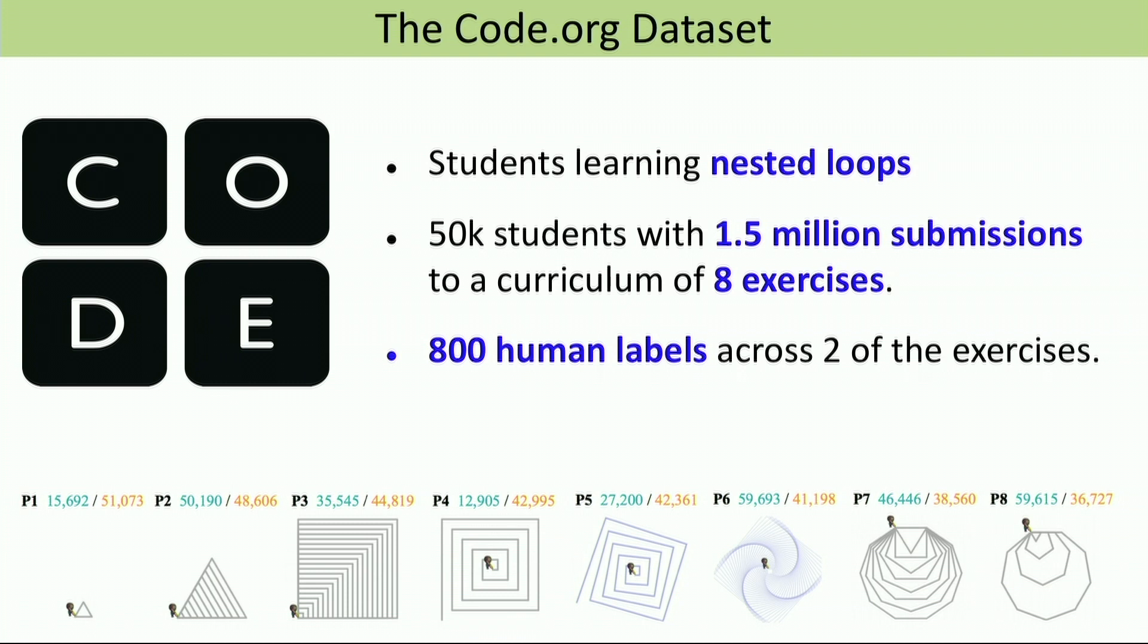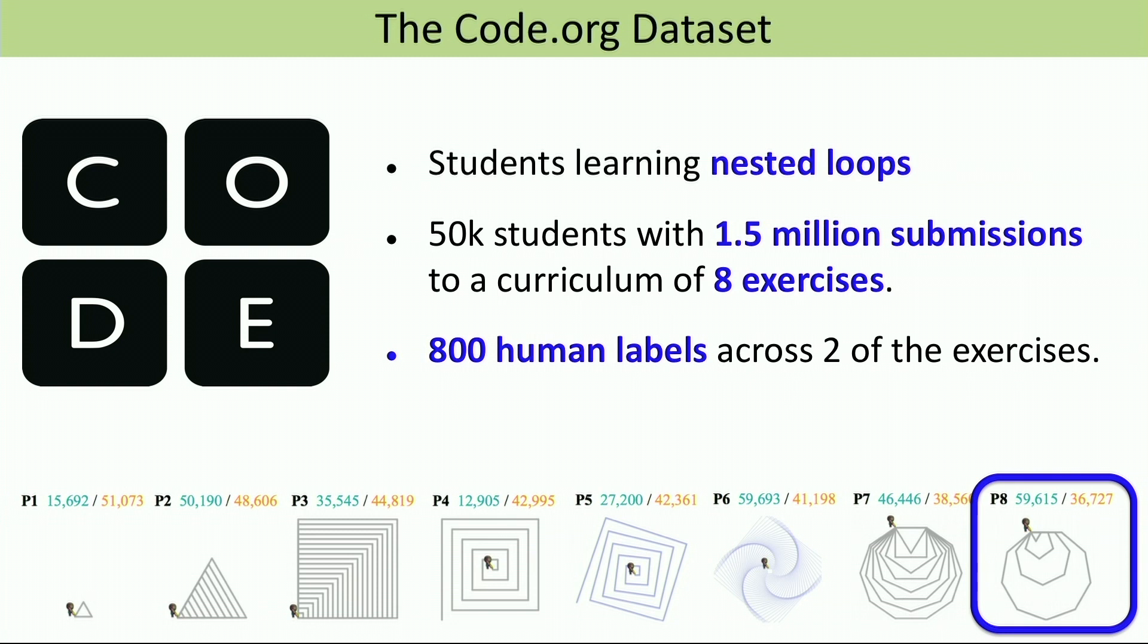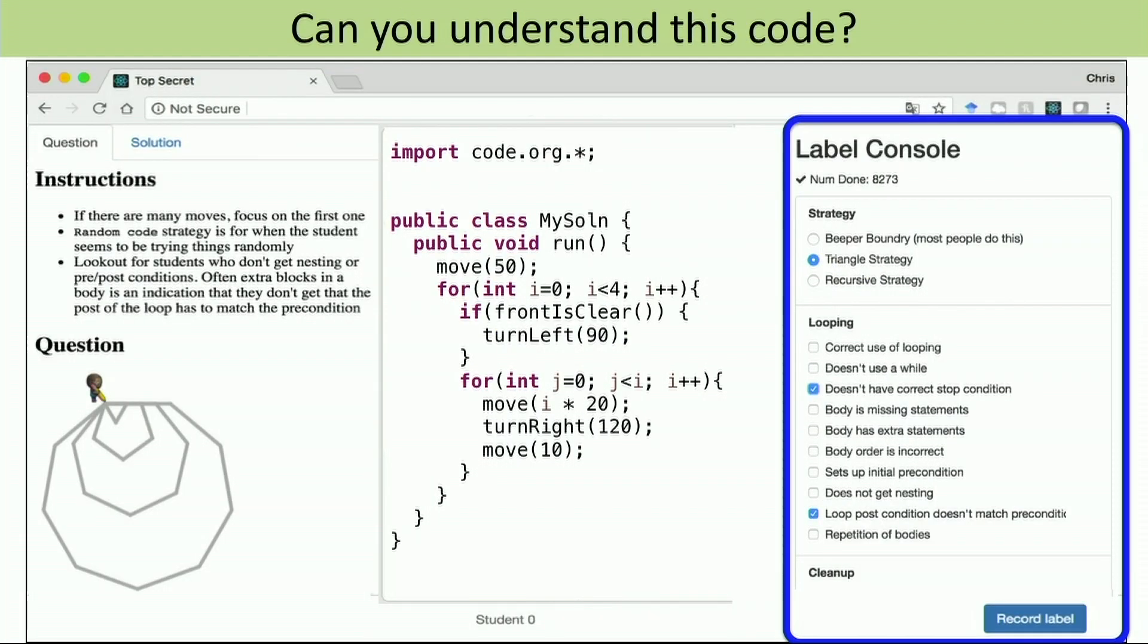I got really interested in this problem. There's lots of ways we could slice it, but one of the ways I slice it, I talked to these people called code.org and they've taught a lot of people to program. We chose one of their units which has eight assignments. They've had over 1.5 million submissions to these eight assignments, and the dataset they gave us represented about 50,000 students. We took one of the assignments and we paid Stanford TAs to label 800 of them.